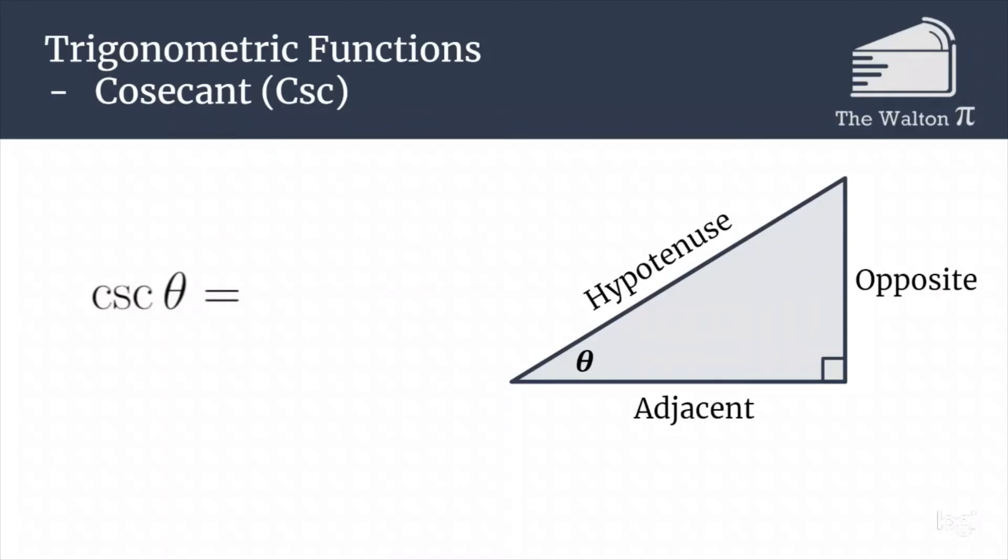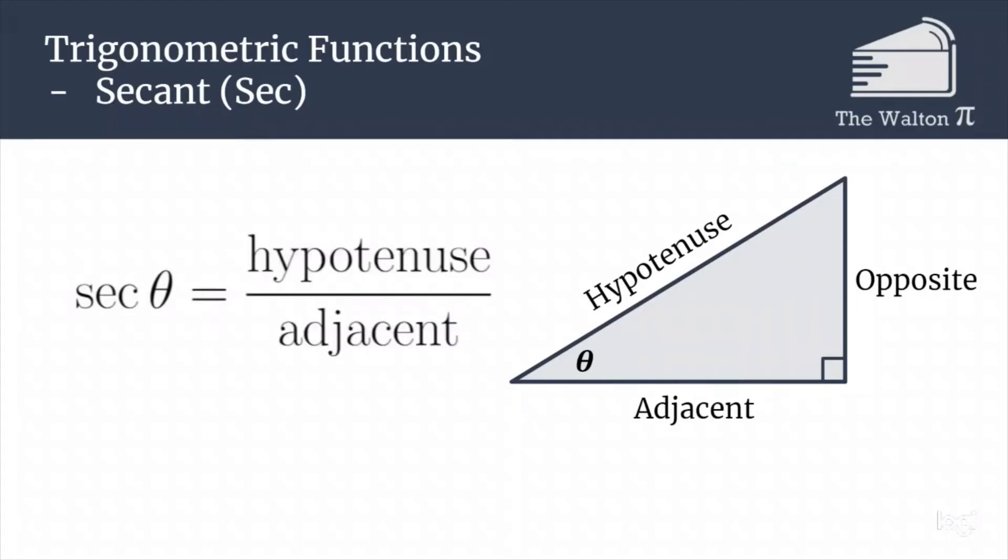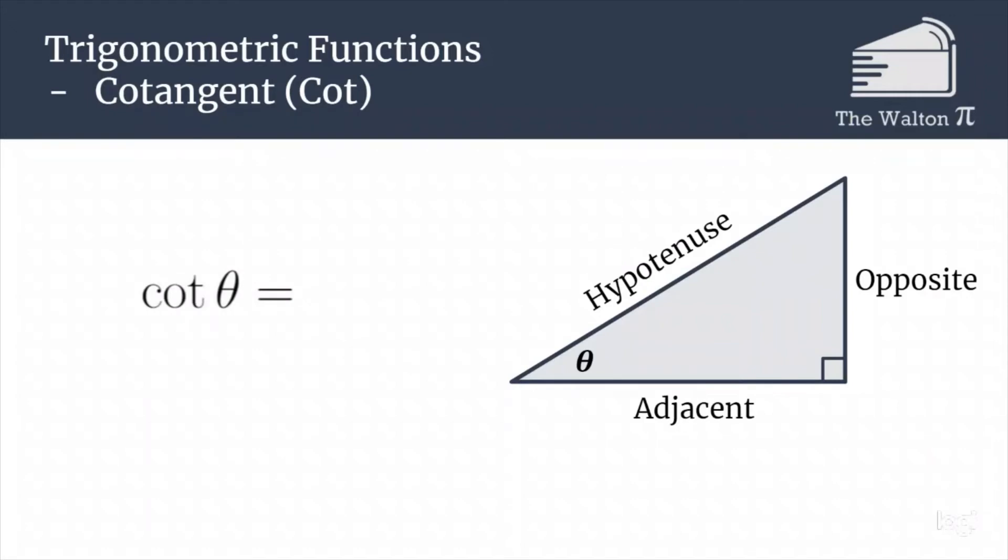Cosecant is hypotenuse over opposite, which is 1 over sine. Secant is hypotenuse over adjacent or 1 over cosine. Cotangent is adjacent over opposite or 1 over tangent.